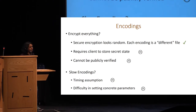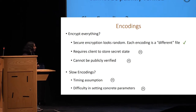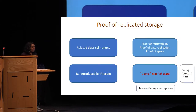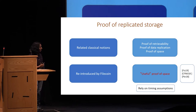The problem with slow encodings is that they rely on timing assumptions, which means we have to estimate the time that a very powerful server could take so that it doesn't fool the client into accepting a proof even when it is re-computing the encoding. This results in difficulty in setting concrete parameters, like when the client should actually timeout. The notion introduced by Filecoin and all subsequent works are time-bounded proofs that rely on timing assumptions. The question we ask is: can we have a proof of replicated storage that does not rely on timing assumptions?